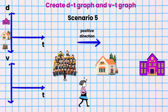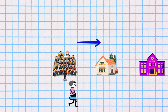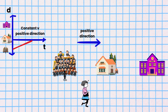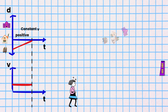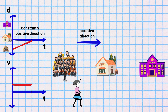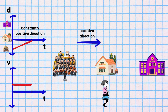Scenario 5. Ion is walking from her orchestra rehearsal to her home at a constant velocity. The DT graph is a straight line with a positive slope since she is walking in the positive direction. The VT graph would be a horizontal line at the appropriate velocity value in the positive quadrant above the time axis.